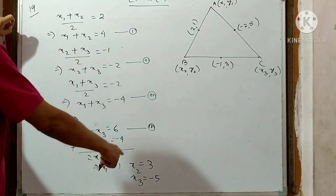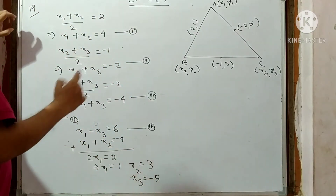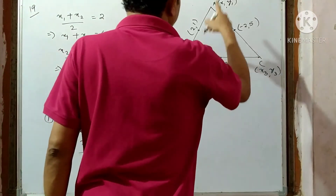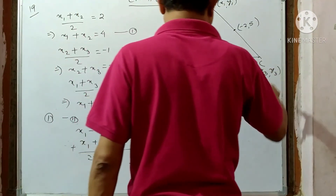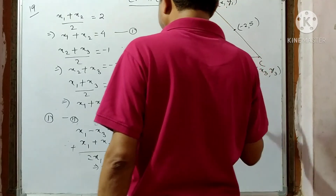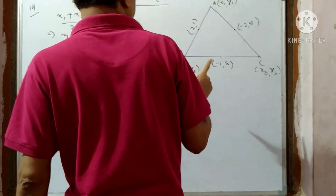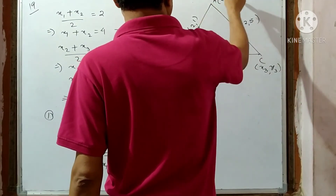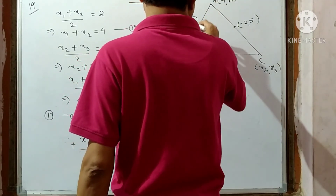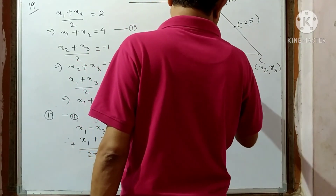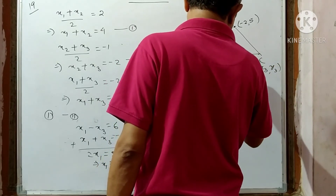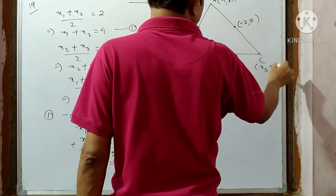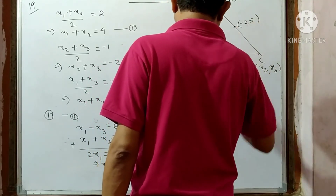So x1, x2, x3 are known. Similarly, you can find out y1, y2, y3. You can find: y1 plus y2 divided by 2 equals 1; y2 plus y3 divided by 2 equals 3; and y1 plus y3 divided by 2 equals 5.